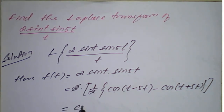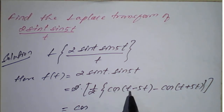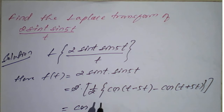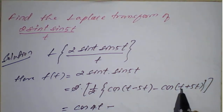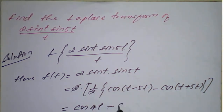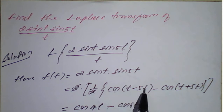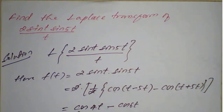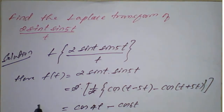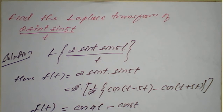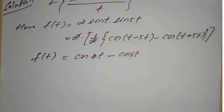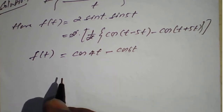The 2 and 1/2 cancel, leaving cos(t−5t) − cos(t+5t). Now cos(t−5t) = cos(−4t) = cos(4t), since cos(−θ) = cos(θ). And cos(t+5t) = cos(6t). So F(t) = cos(4t) − cos(6t). Now it is ready to apply the Laplace transform directly.